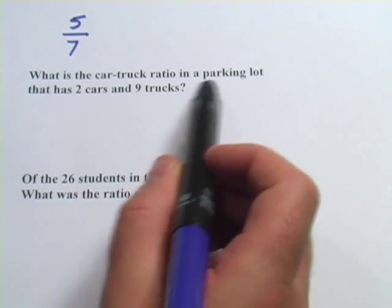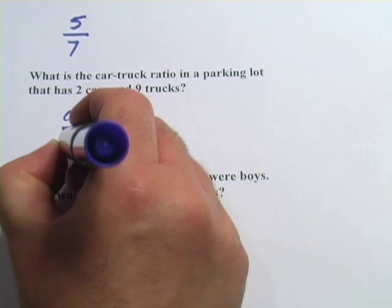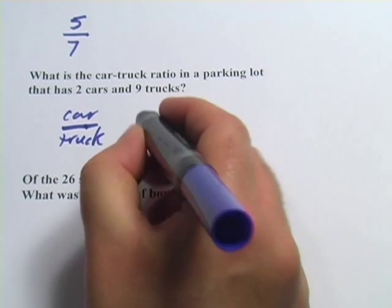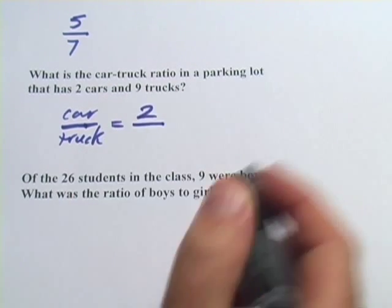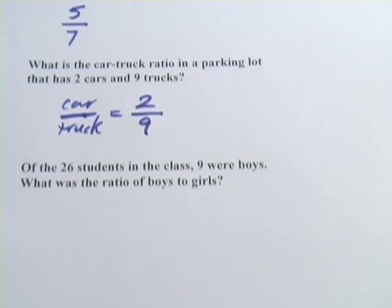What is the car-truck ratio in a parking lot that has two cars and nine trucks? So car to truck. There are two cars and nine trucks, so that is a two to nine ratio. One more.